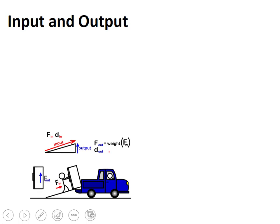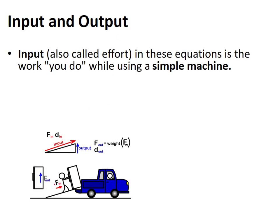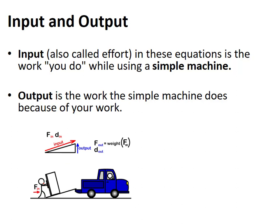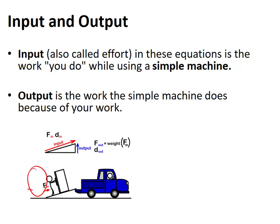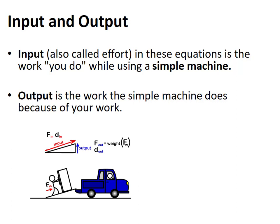When thinking about input force, it's called effort — it's what you do. This person is pushing the fridge up the plank; this is the force in and the distance in. Output is what the machine does because of your work. The machine is lifting the fridge a certain distance off the ground — that's the output. Input is what you're putting in; output is what you're getting out of using that machine.